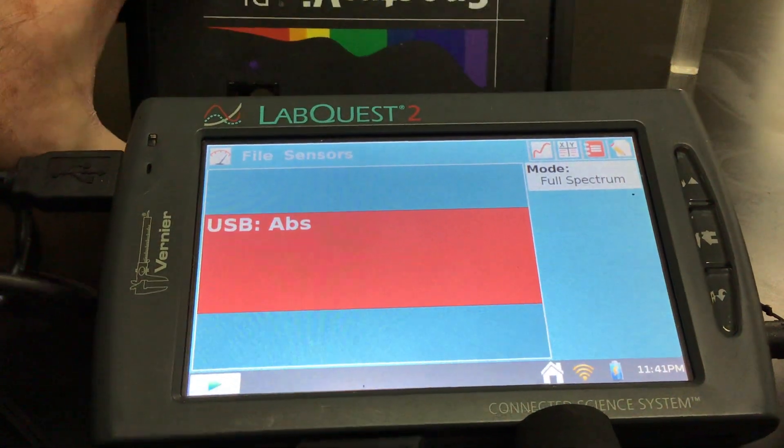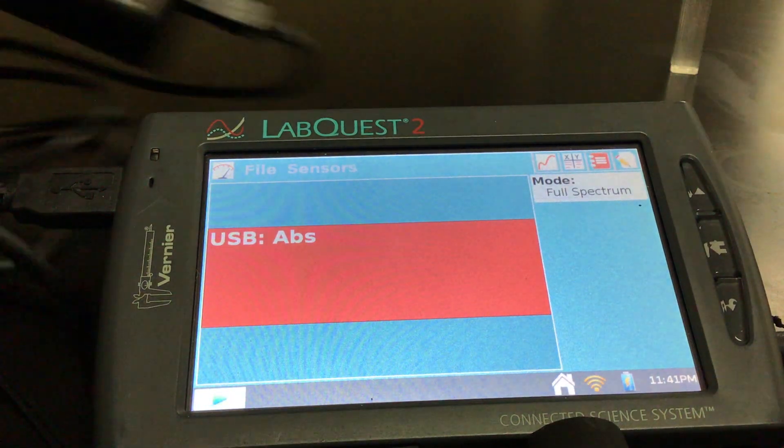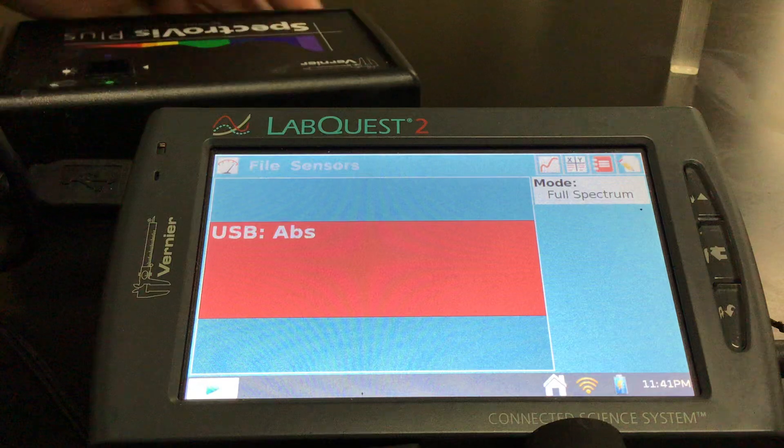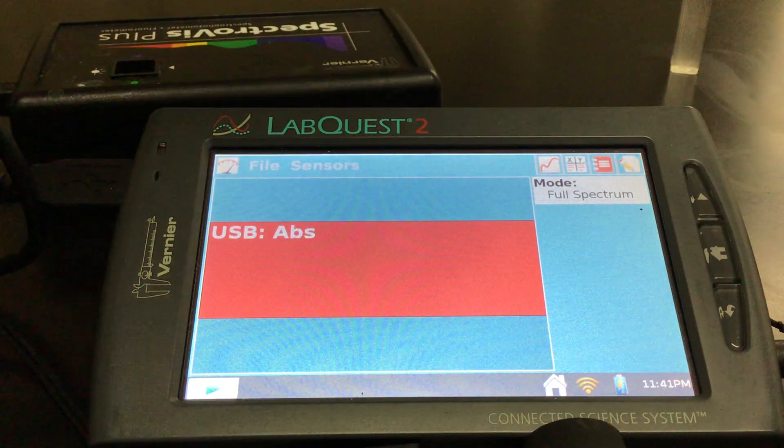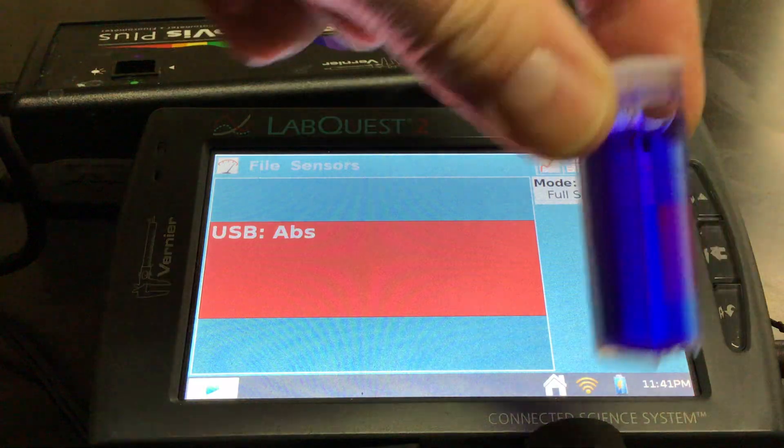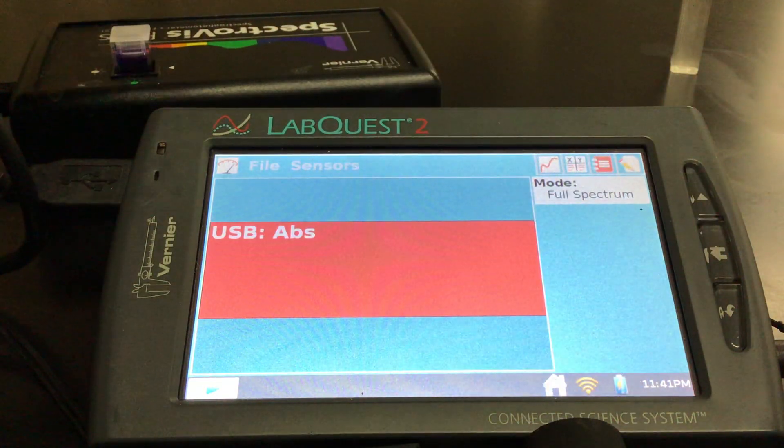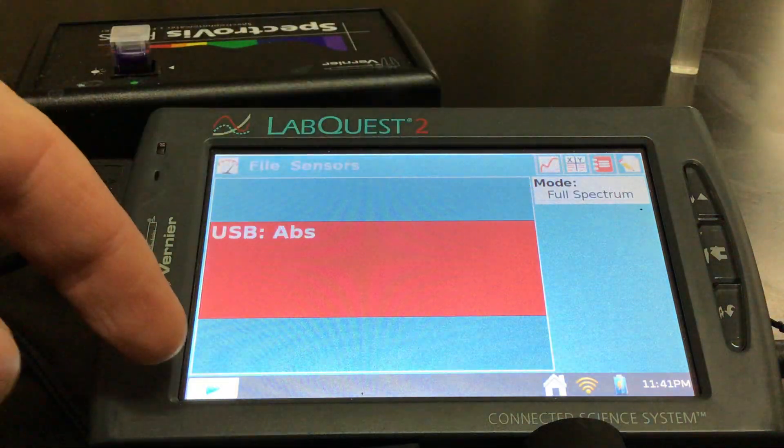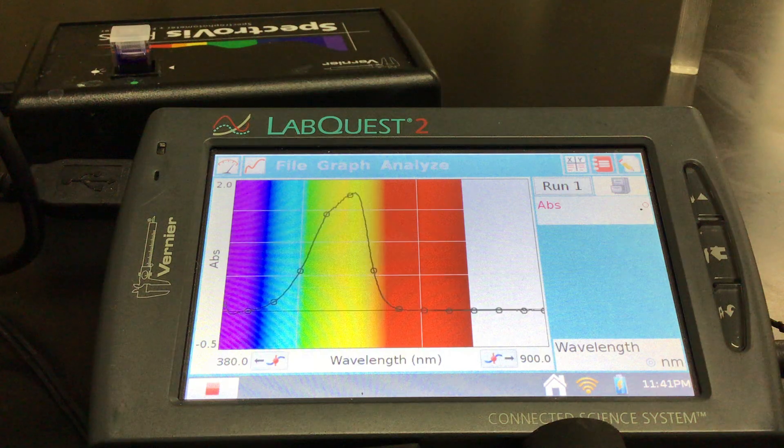It's upside down and I've already run my blank. What I'm going to do is choose the wavelength that's most appropriate here. I've got a little cuvette of crystal violet and set that in my spectro viz. I'm in full spectrum mode and we're gonna hit play here.